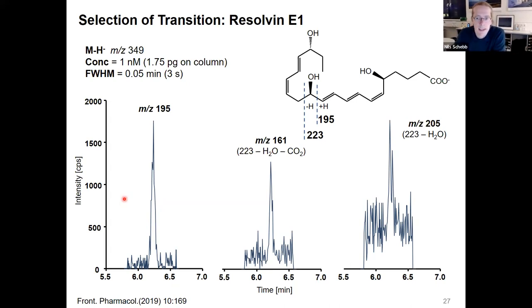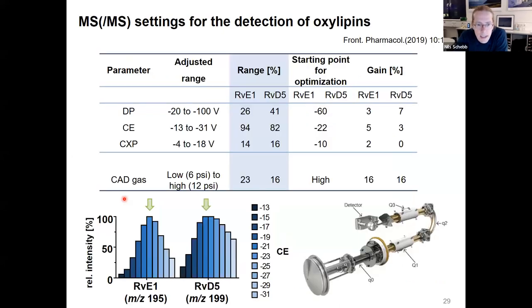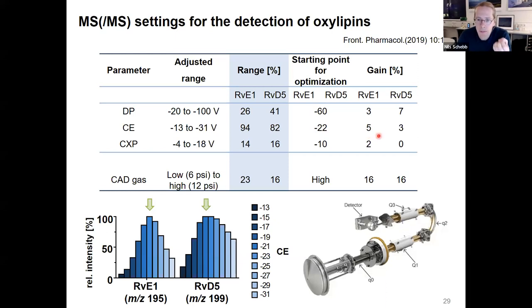Once you have selected these transitions, it's important to set up the mass spec so that transitions are detected with high sensitivity. For this, it's important to adjust the electronic parameters of the instrument. For example, the collision energy — if you choose a completely wrong value, you don't have any sensitivity at all. However, if you have a good starting point, such as minus 22 on the instrument, the optimization yields only a little better signal, because oxylipins behave more or less similarly with respect to electronic parameters in the triple quadrupole mass spectrometer.